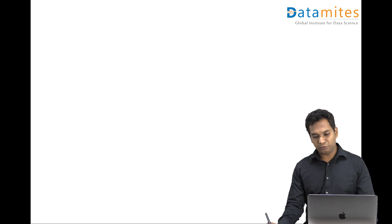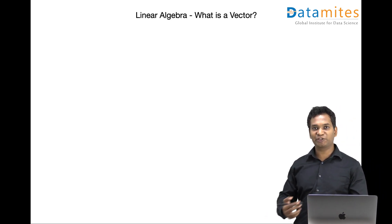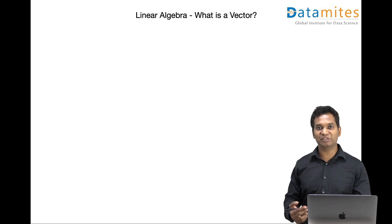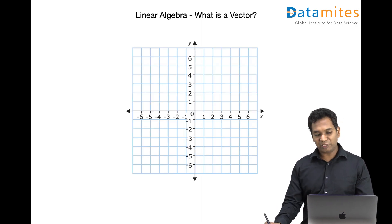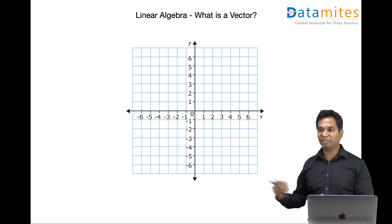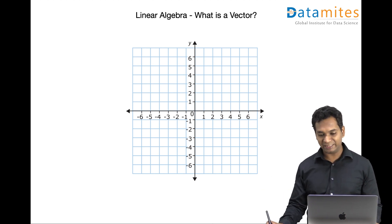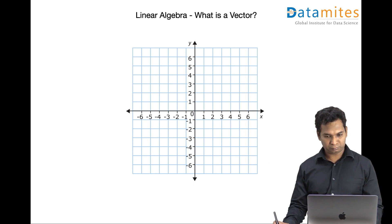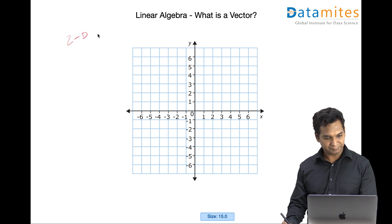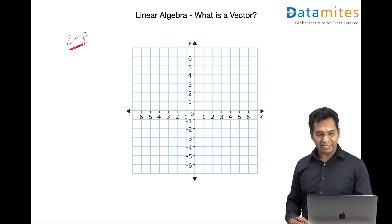If you look at it, vector has a direction and scalars have no direction. This much we already know. So if you want to represent a vector on a linear scale, I am taking a two dimensional linear scale, 2D. So you have a two dimensional linear scale, x and y.